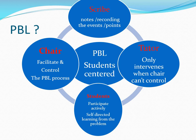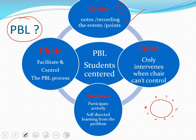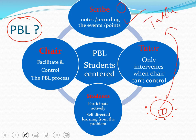This is the composition of problem-based learning used as a strategy. First, there is a scribe — the person who takes notes and records the events being discussed. Remember, this is a group discussion around a table, with students as participants. Something is put as an agenda on the table, and this something is brought by the tutor. The tutor only intervenes when the chair cannot control.